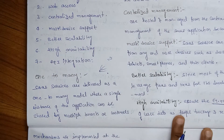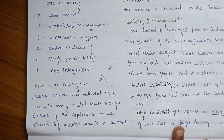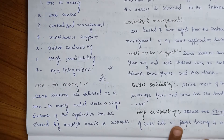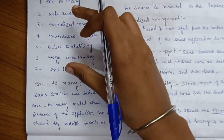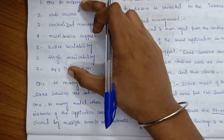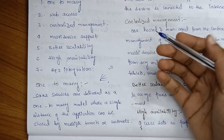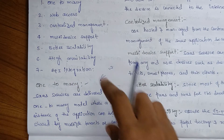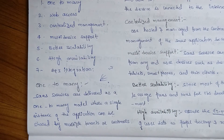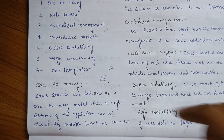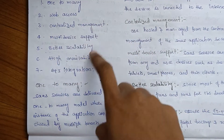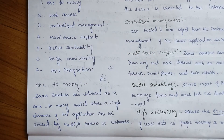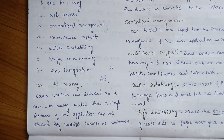So these are the seven characteristics of Software as a Service. First, try to remember all seven characteristic names, and then elaborate on each one. That is the way to approach this topic effectively.